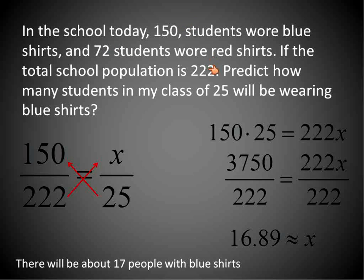The sample was 150 out of 220. The prediction I'm making is that about 17 people in my classroom will be wearing blue shirts. That's how a sample turns into a prediction using proportions.